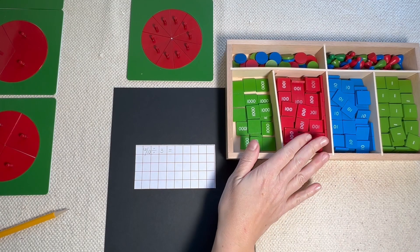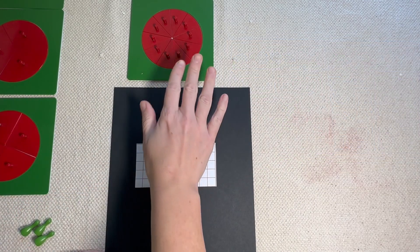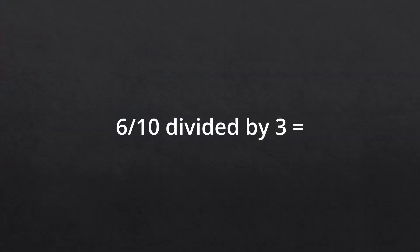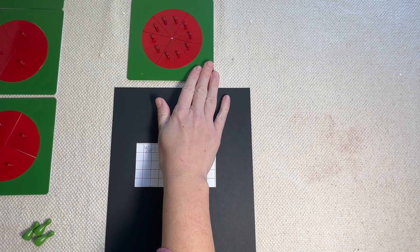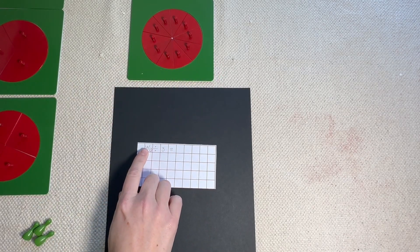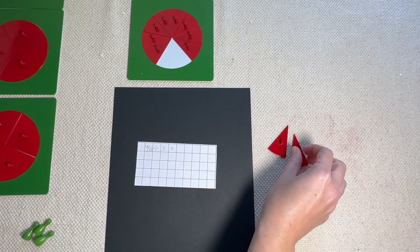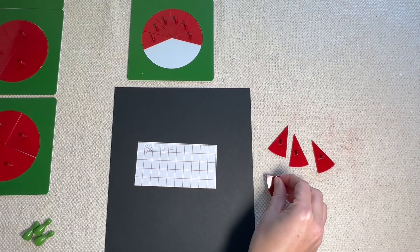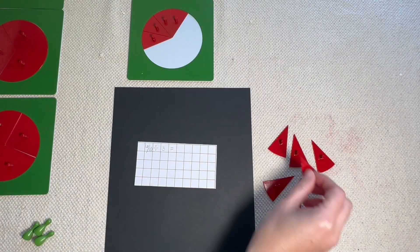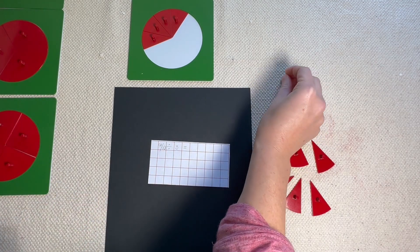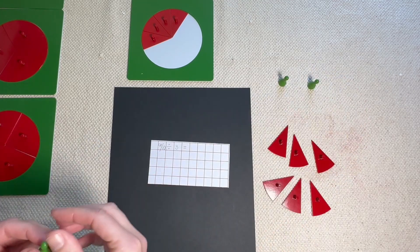Now let's move on to division. For division, you're going to need to go to your stamp game and get out your Skittles. Let's work with the family of the tenths again. Our equation is going to be 6/10 divided by 3 equals. We already have the family of the tenths. And how many are we going to use from the family of the tenths? We're going to use 6, so let's count out 6: 1, 2, 3, 4, 5, 6. And the number 3 tells us how many Skittles we're going to use: 1, 2, 3.